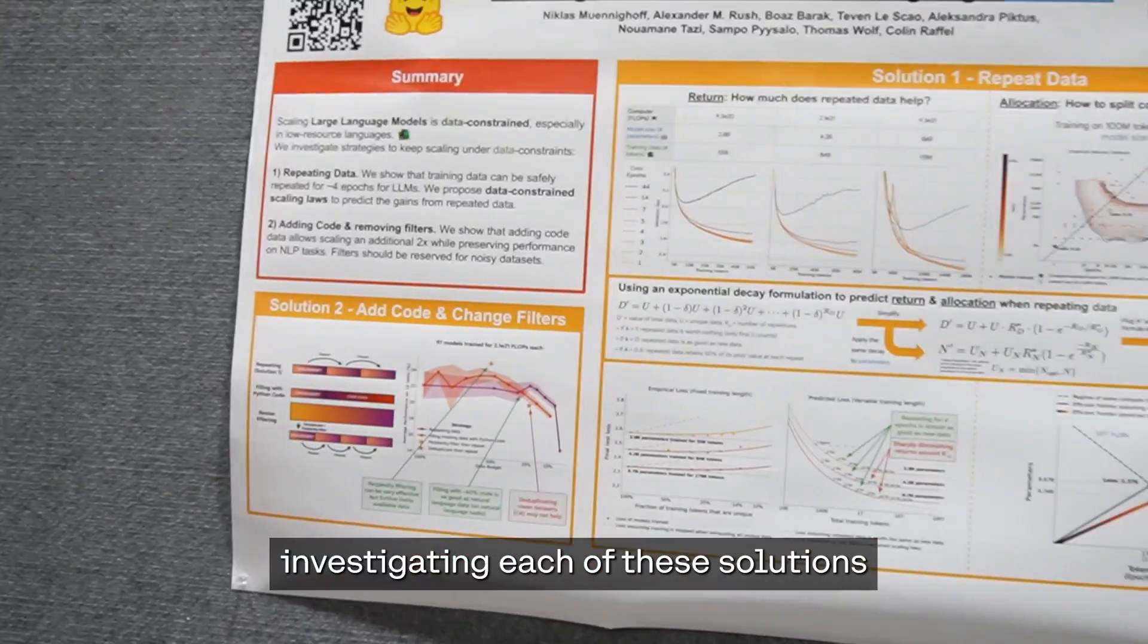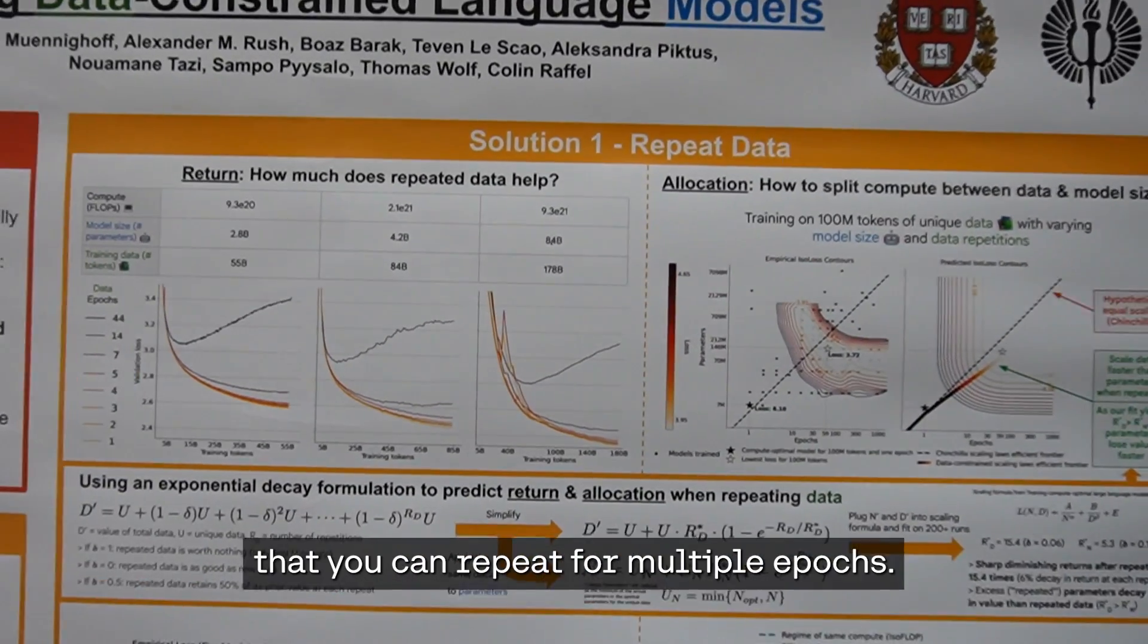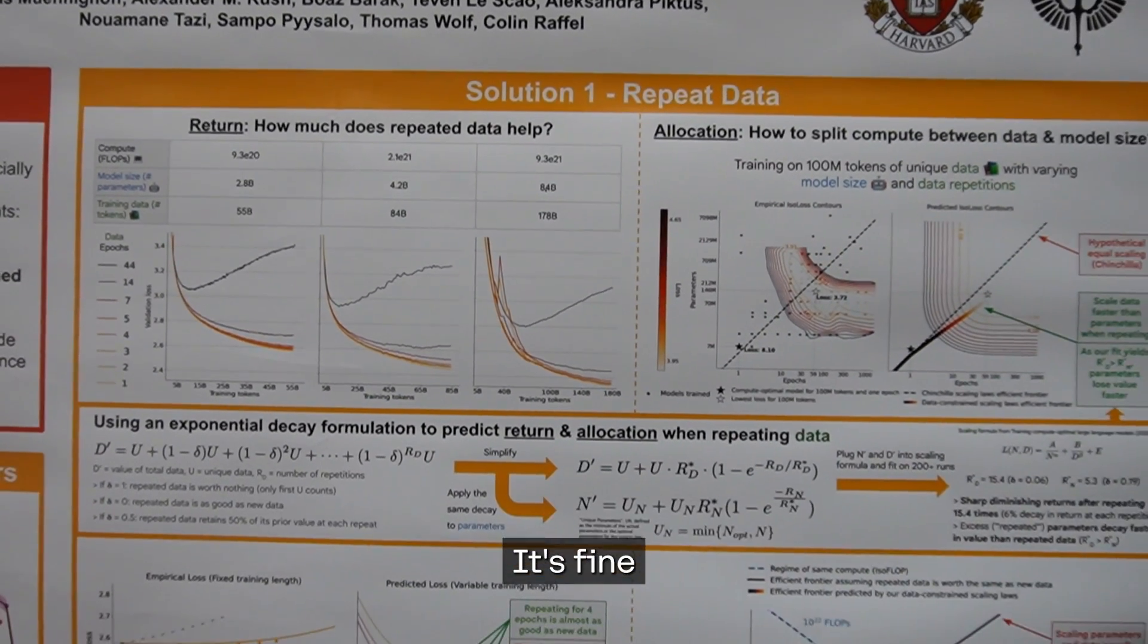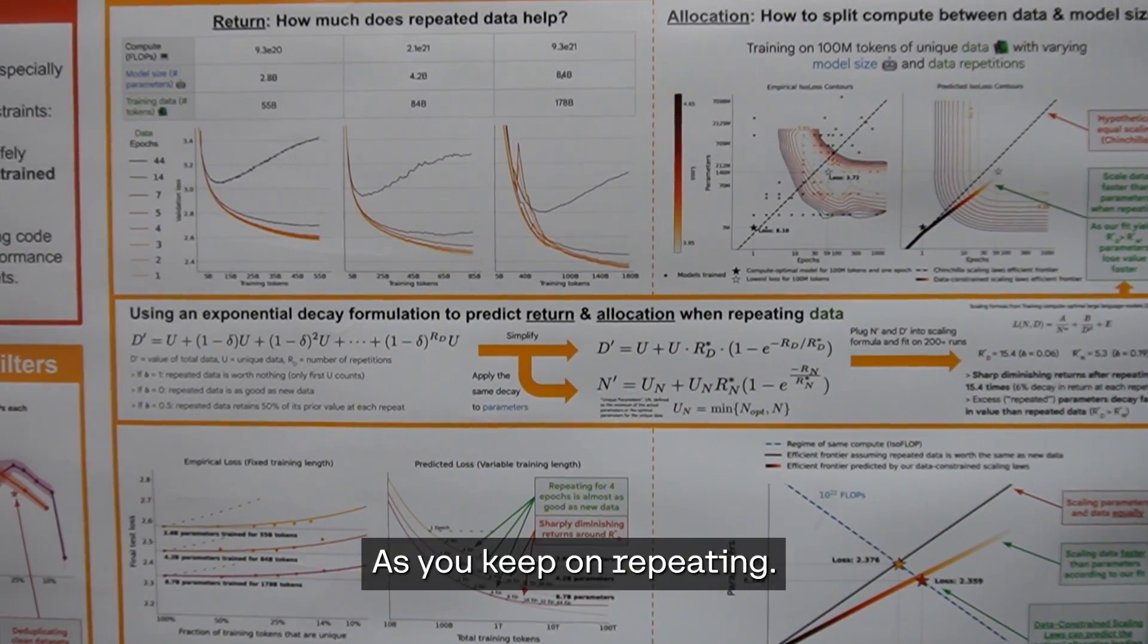We have two boxes here investigating each of these solutions. On the repetition side, the key findings are that you can repeat for multiple epochs—it's fine—and we can even come up with a formula to predict the exact decay in value as we keep repeating.